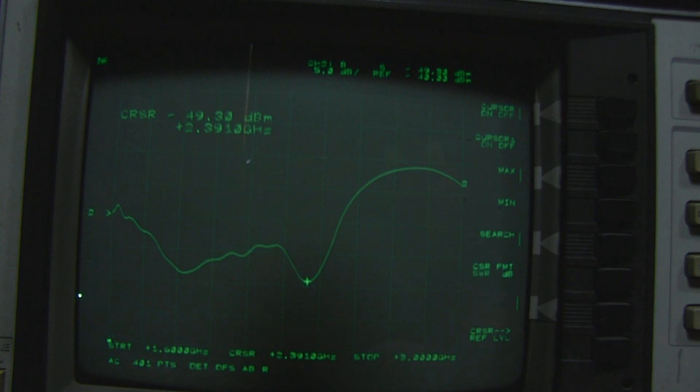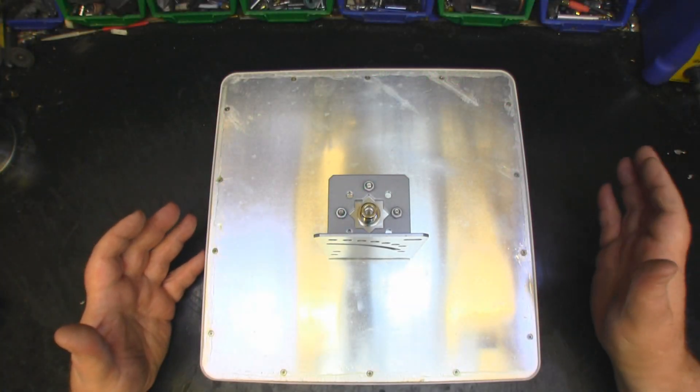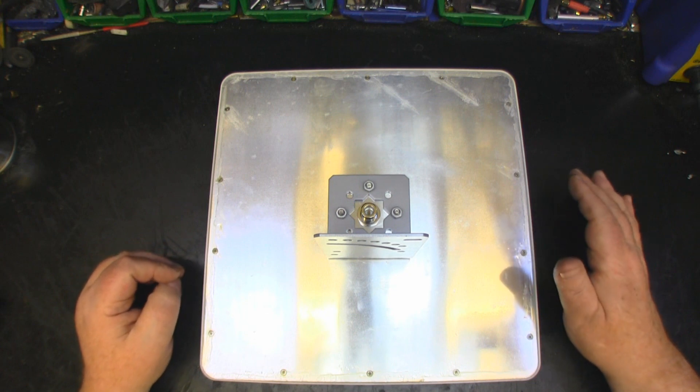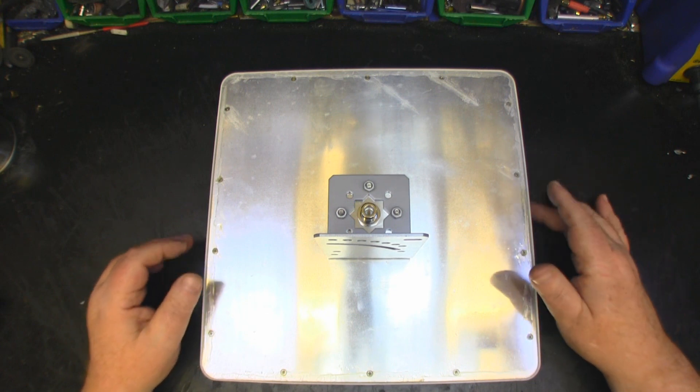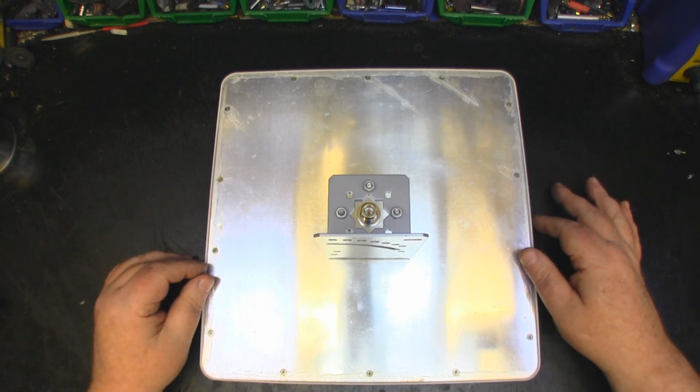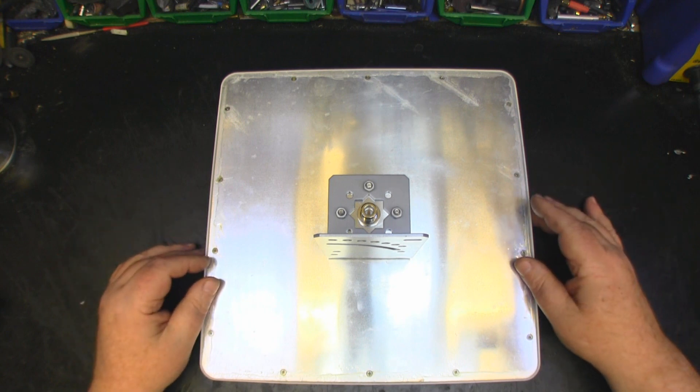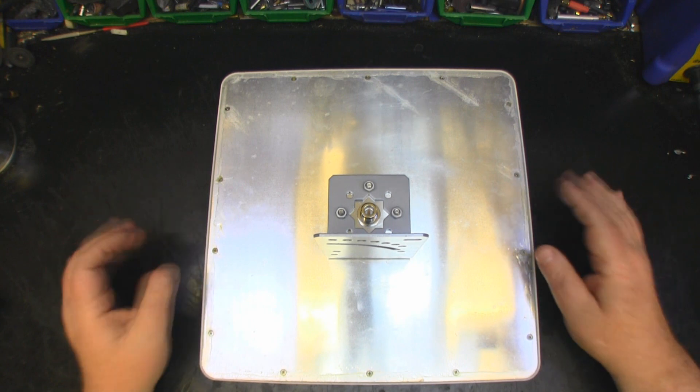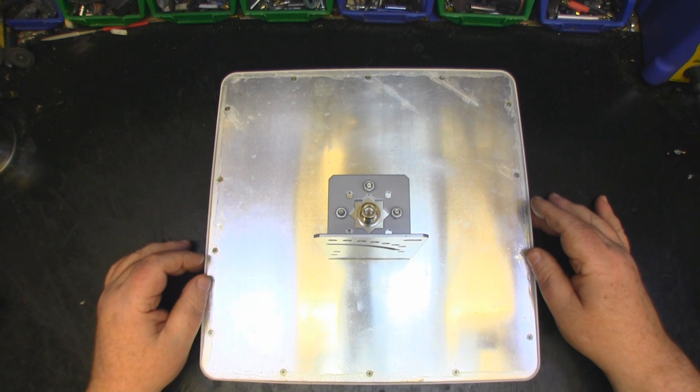As we saw on the test bench, really nice responses there at 5 gigahertz Wi-Fi especially, and really broadband as well. I wasn't expecting it to be quite so broadband. It was broadband on the 5 gigahertz and for the 2.4 gigahertz almost into the 1800 megahertz there for the cellular networks.